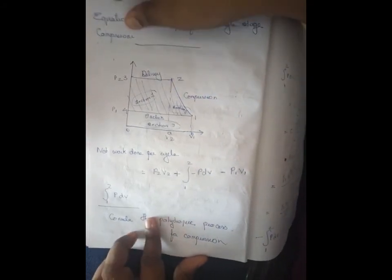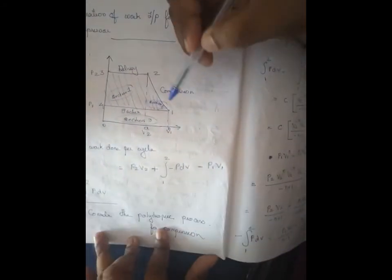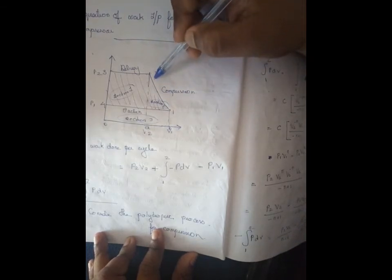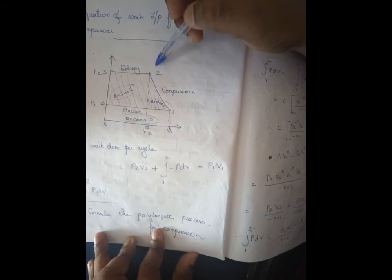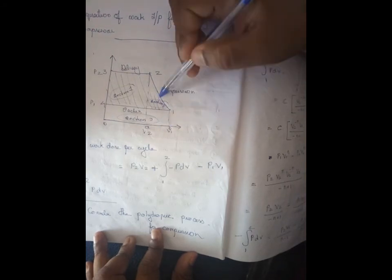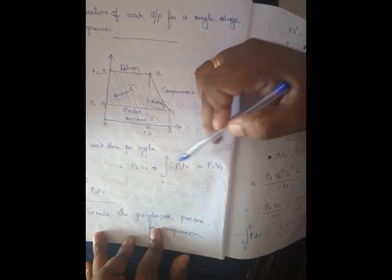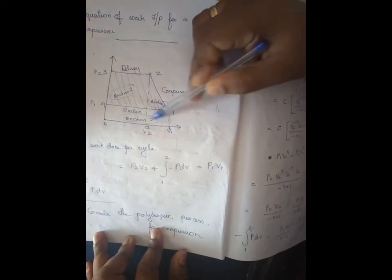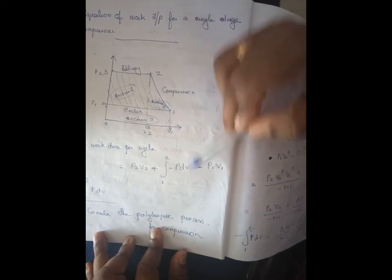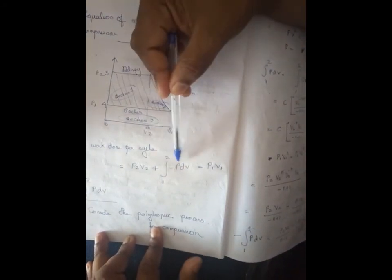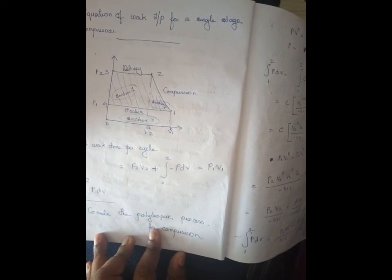Section 2 corresponds to P2 and the polytropic compression curve. Section 2 area is the integral of P dV from 1 to 2. The integral PDV gives the area under the polytropic compression curve from V1 to V2.